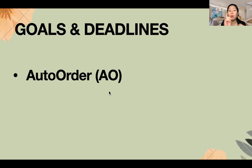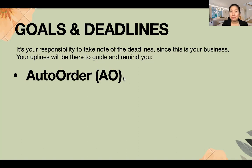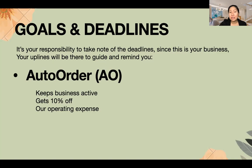Auto-order is optional — it's up to you if you want to do it or not. But if you want to earn, then do auto-order. The advantages: it keeps your business active, and you get a 10% discount on products. This is considered our business expense. Unlike traditional business where expenses like rent, utilities, and salaries don't come back, in USANA our business expense comes back to you because it's still products.